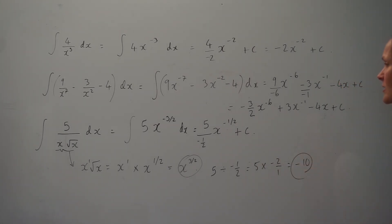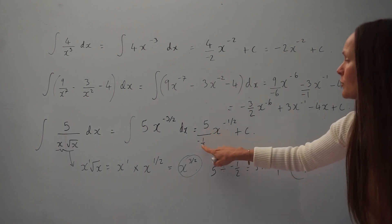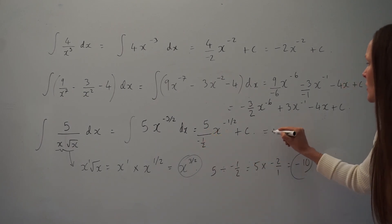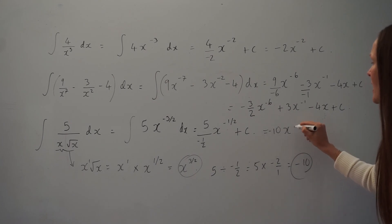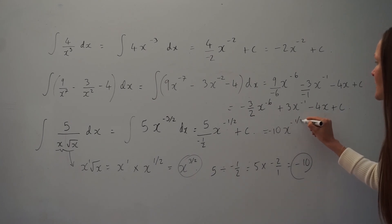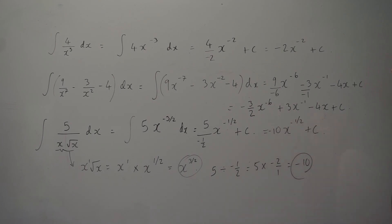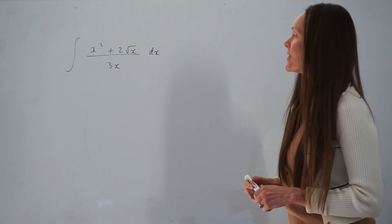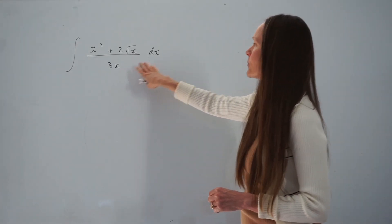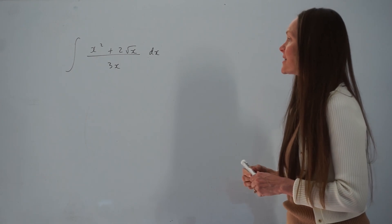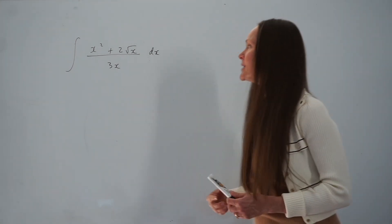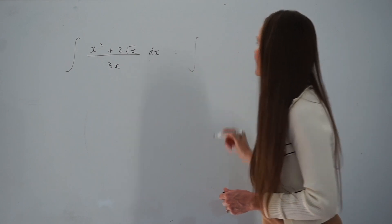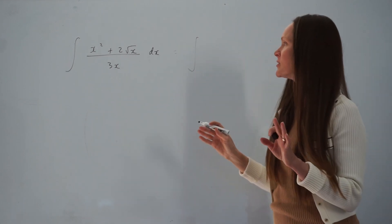So when you divide 5 by negative 1 half you get negative 10. The answer is negative 10x to the negative 1 half plus c. In the next question, we have to find the integral of this fraction with respect to x. Try to simplify the question first before you integrate.